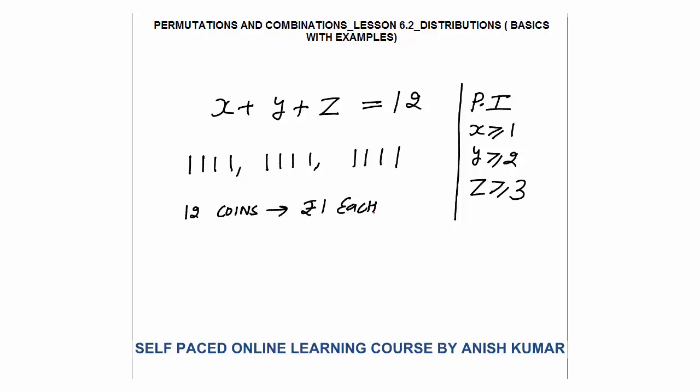What I will do is first give them 1, 2, or 3 coins before applying the partition method. Because in the partition method, students x, y, or z may get 0 coins. So first I give 1 coin to x, 2 coins to y, and 3 coins to z. Now the remaining coins I will distribute by partition method.